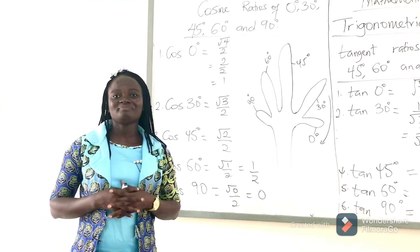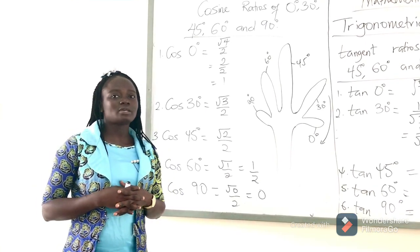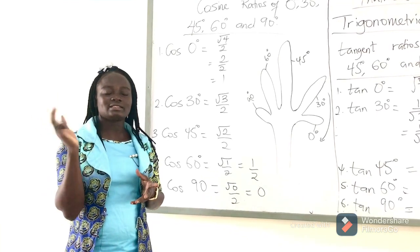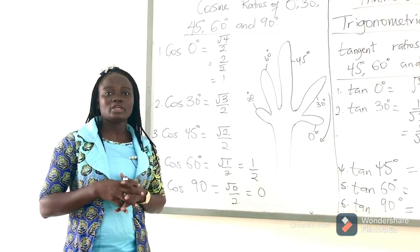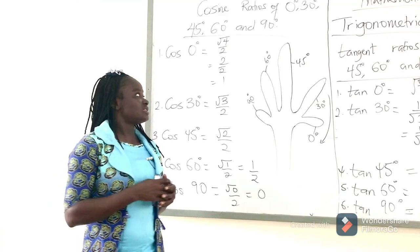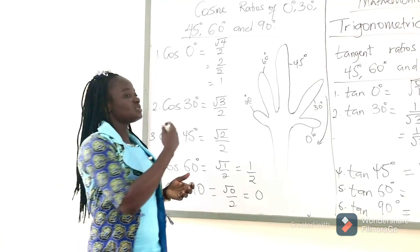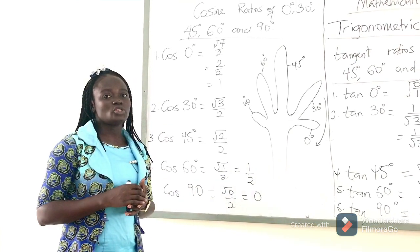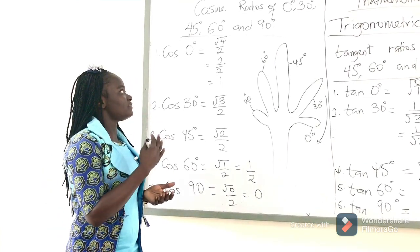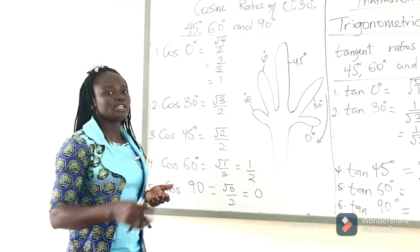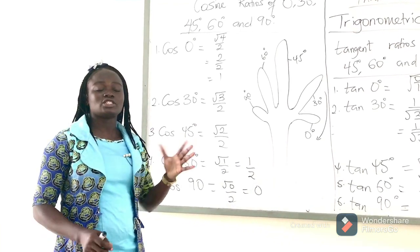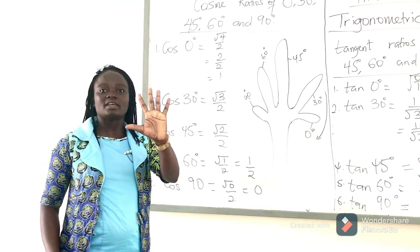Today we are going to talk about the cosine ratios. We learned about the sine ratios in our previous lesson. This is the cosine ratios of 0 degrees, 30 degrees, 45 degrees, and 90 degrees. We are going to learn about it using the fingers.